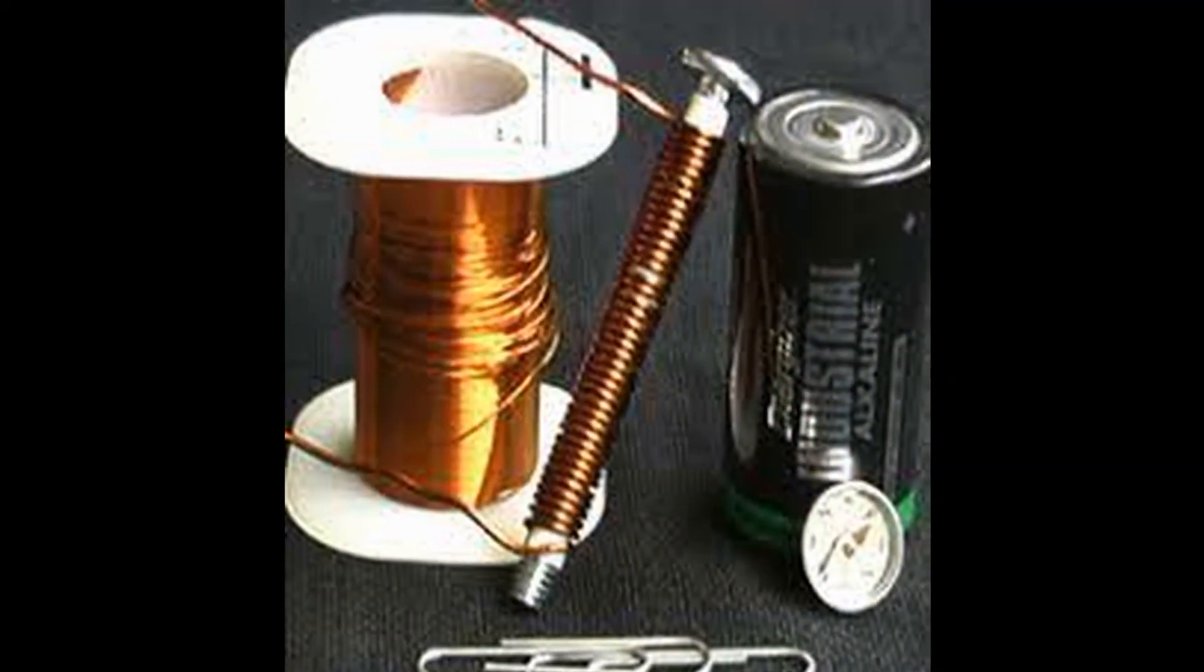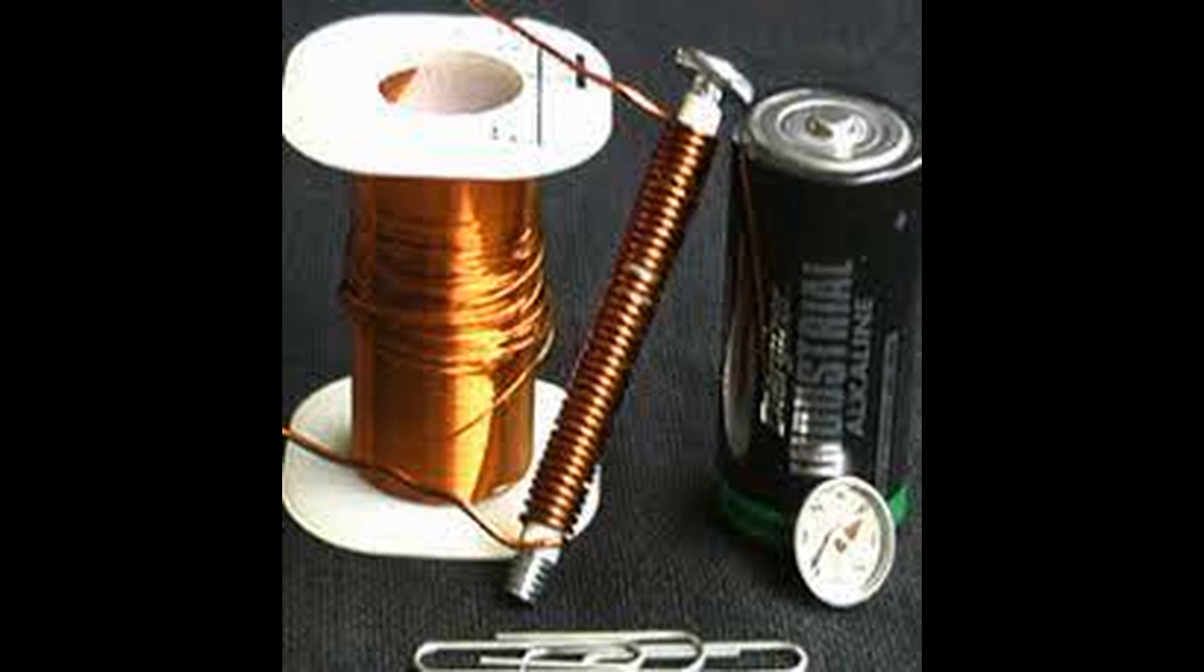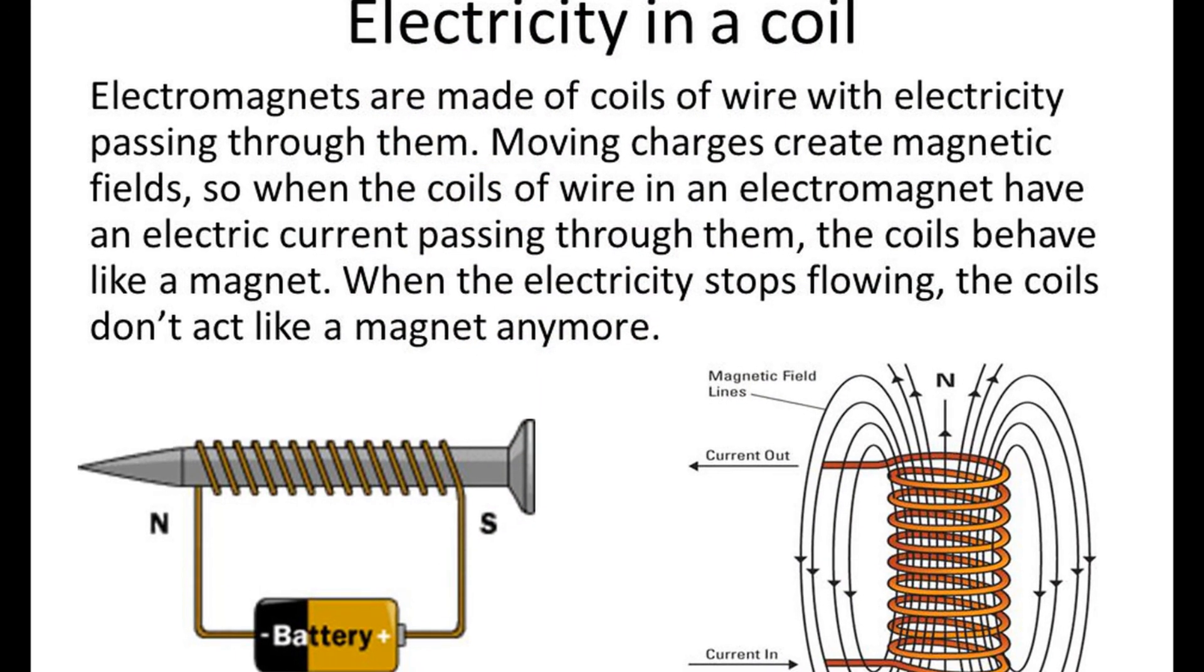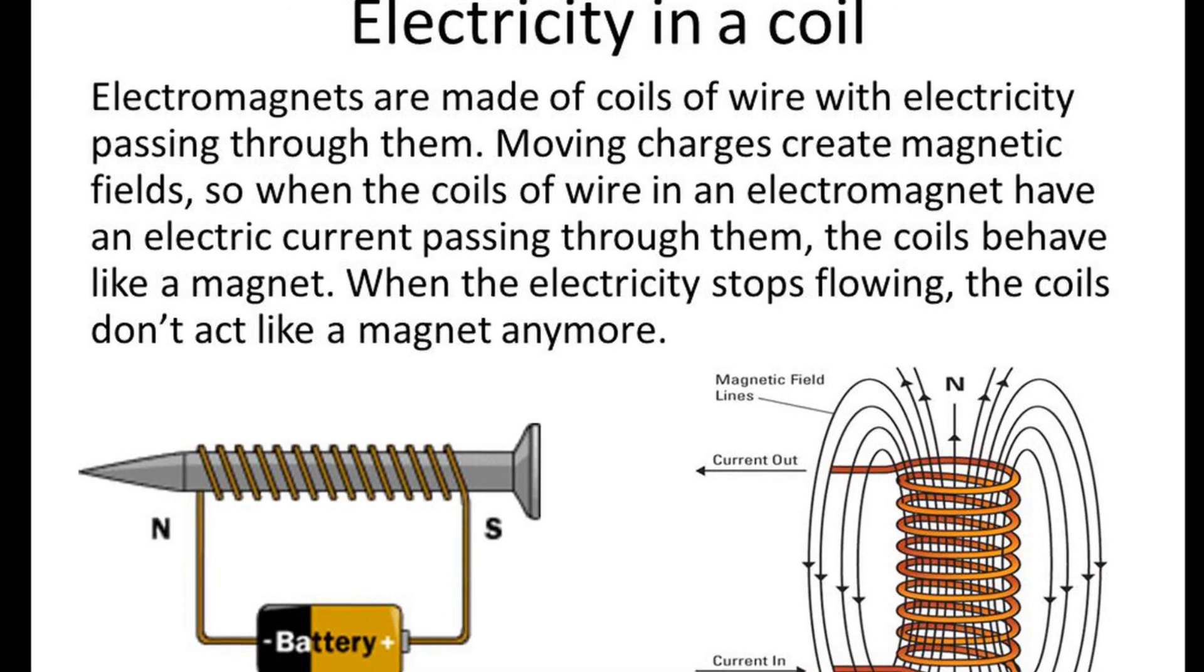An electromagnet is made by coiling wire around a metal core and passing electricity through the coil. The strength of an ordinary permanent magnet is fixed. But the strength of an electromagnet can be increased by passing a stronger current through the wire coiled around it.